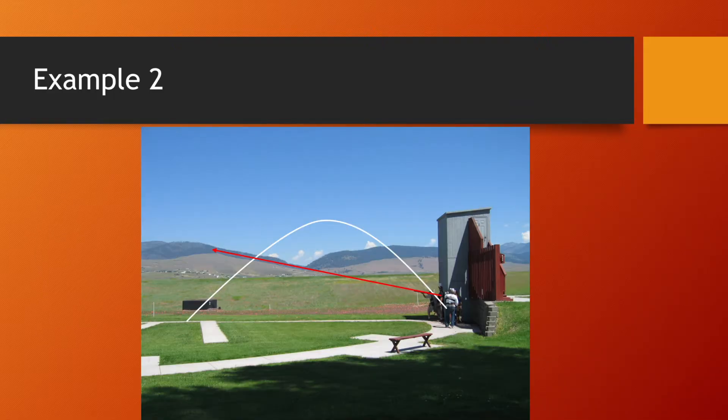Now, example two here, you see that we are now going into a more real life example. You see here a curve of which the clay would take if it were to be thrown, and the trajectory at which the shooter is aiming at.